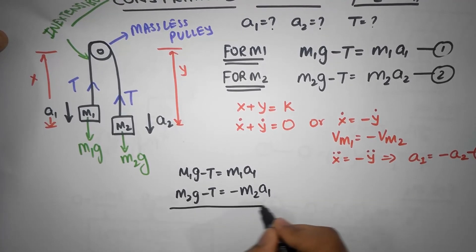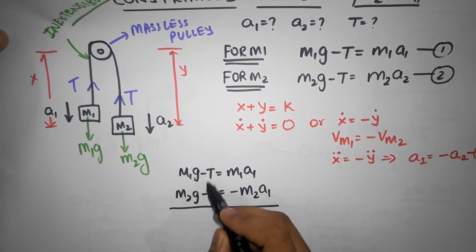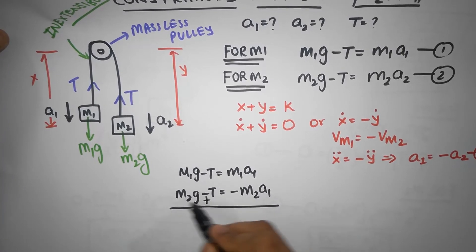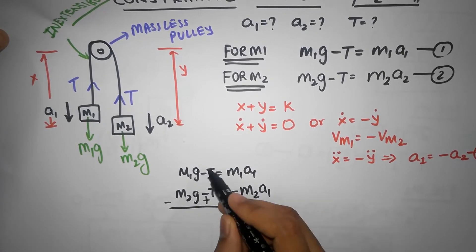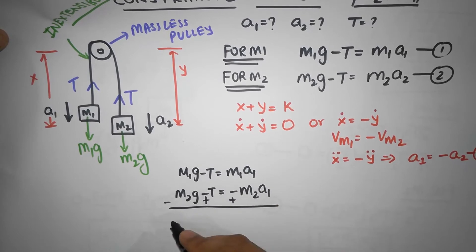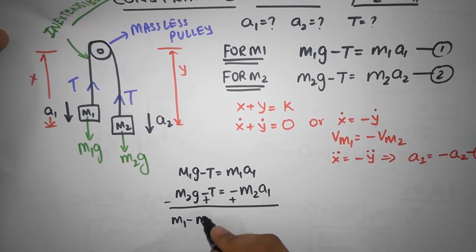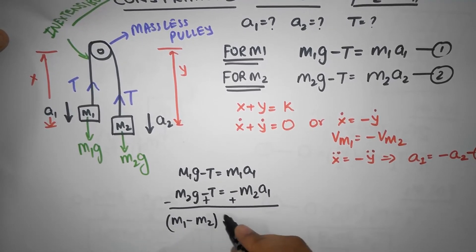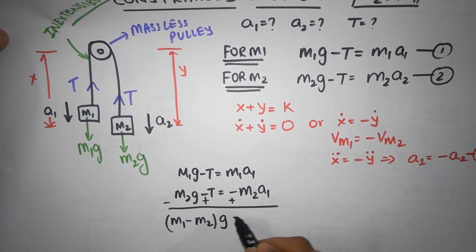So minus M2a1. And I'm going to try and get rid of T. So I'm going to subtract. This cancels out.